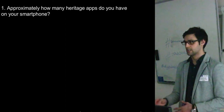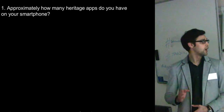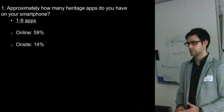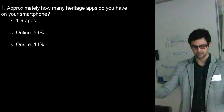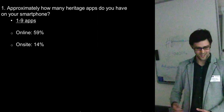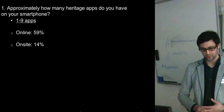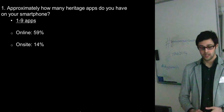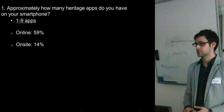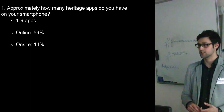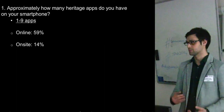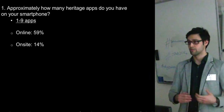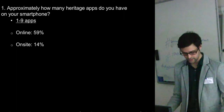Looking at how many heritage apps people have on their smartphones, most people only have between one and two. People online tended to have significantly more — between one to five on average — whereas people on site only had between one and two. The reason is that online users tend to use multiple single-site apps, whereas on-site visitors use one larger app covering multiple sites as part of a day out or week of tourism.